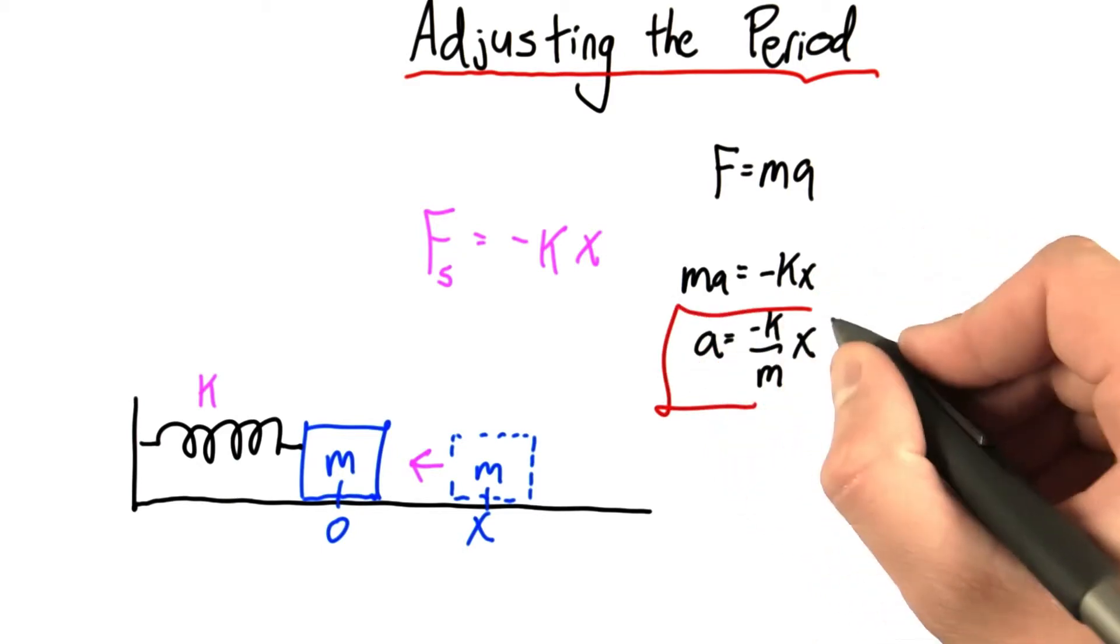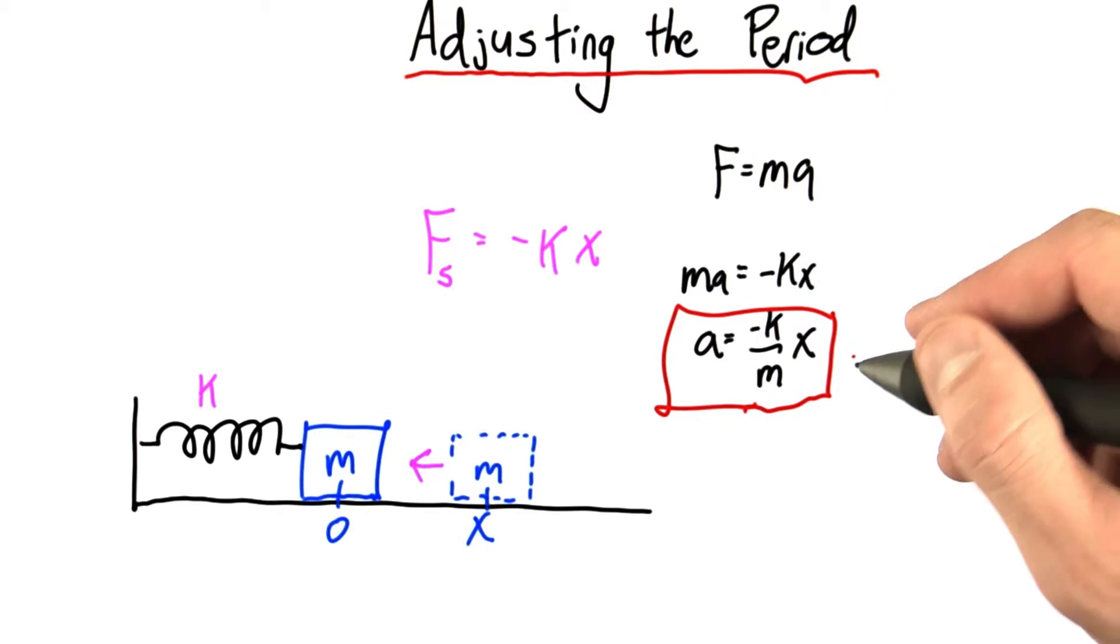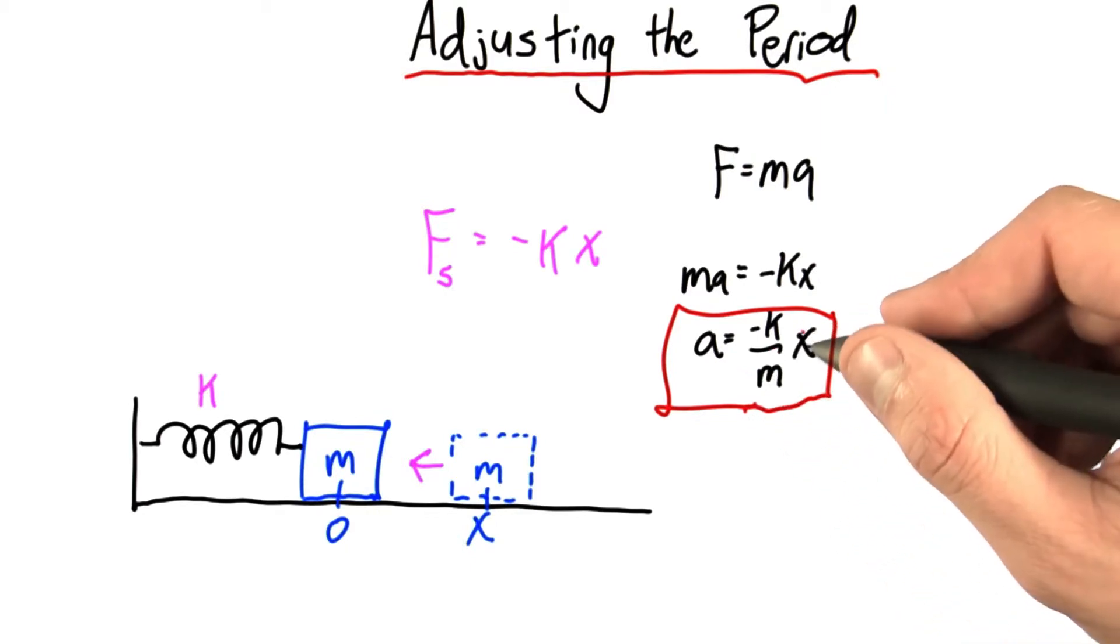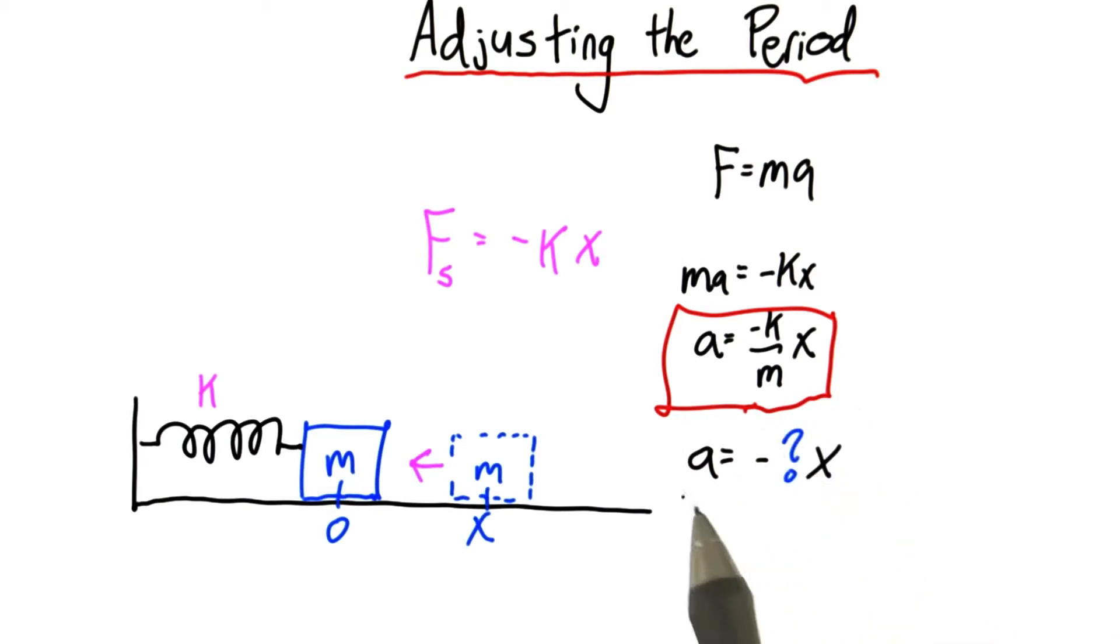Now I hope you followed along so far. The acceleration is equal to minus k over m times x. The reason why I say I hope you followed along is because unfortunately now I have to just tell you something. And that something is that whenever you can write a force law like this, that the acceleration is equal to minus something times x times its displacement from its equilibrium.